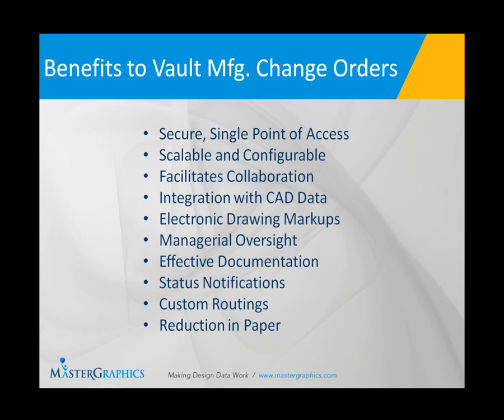Another piece of information that gets lost a lot of the time is drawing markups. The markup might happen from the shop floor, from production, manufacturing — wherever that markup takes place. If it's not being diligently organized or managed, it could be lost and changes cannot be made to a particular drawing. With Vault Manufacturing, we have an electronic drawing markup area where we can apply those markups, and they're organized in one single location. For managers that need to understand where a current change order is — whether it's being approved, in review, or being worked on — that individual has the ability to log into the system and see exactly what's going on.